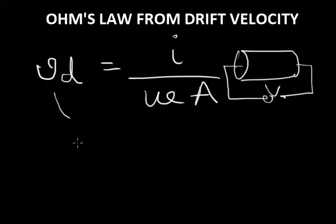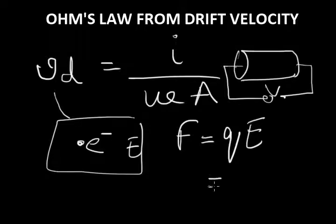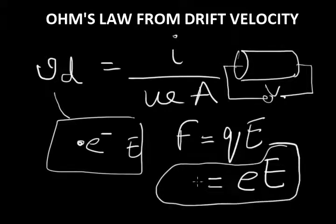Say for example we have an electron placed in electric field E. From Coulomb's force, the force is equal to q into E. When we apply this force on an electron, we get the value of small e into capital E. So that is the force on the electron right now when it is placed in an electric field of E.